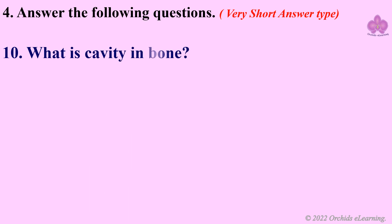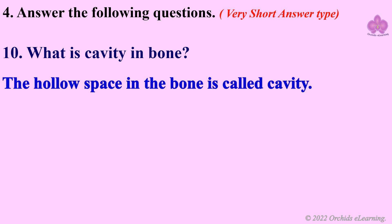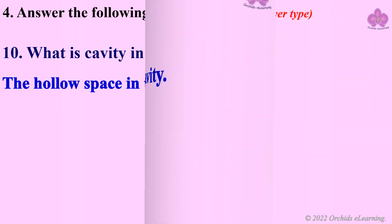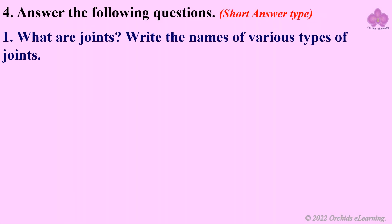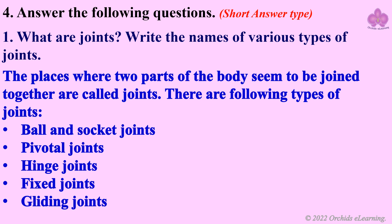What is a cavity in a bone? The hollow space in the bone is called a cavity. What are joints? Write the names of various types of joints. The places where two parts of the body seem to be joined together are called joints.